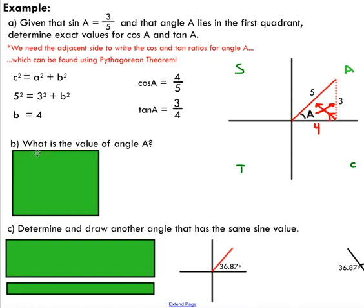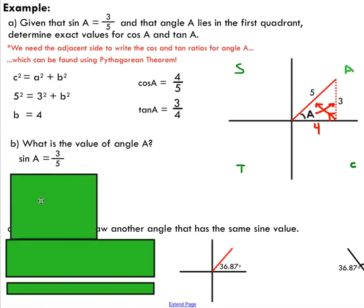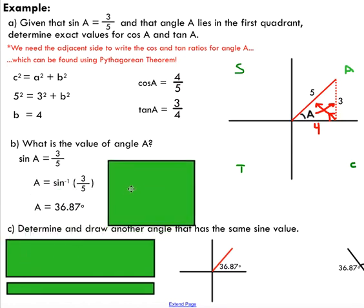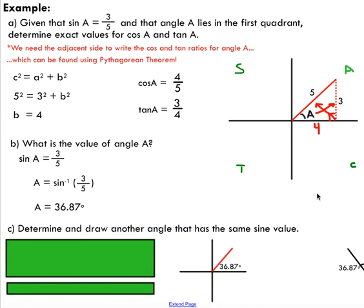Part B here says: what is the value of angle A? We want to actually determine the measure of angle A. We can do that just by looking at our sine ratio. Remember, you can take the sine inverse of both sides and you'll see that you end up with 36.87 degrees.